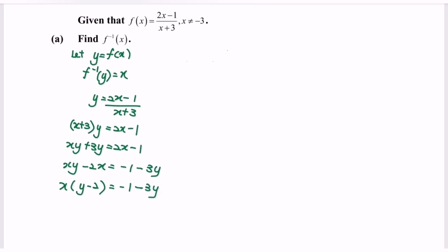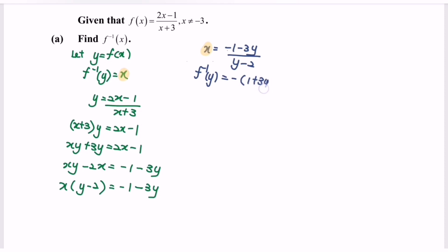Express x in terms of y: x equals (negative 1 minus 3y) over (y minus 2). Since x is f inverse of y, we have f inverse of y equals (negative 1 plus 3y) over (y minus 2). Rewriting, f inverse of x equals (1 plus 3x) over (2 minus x).